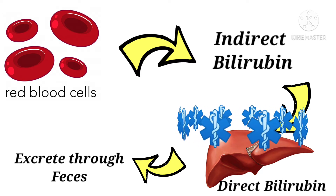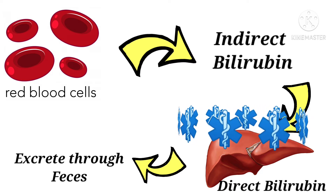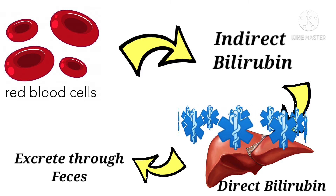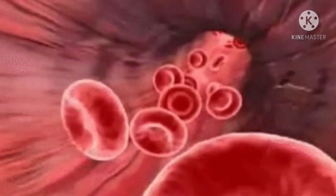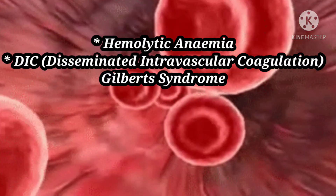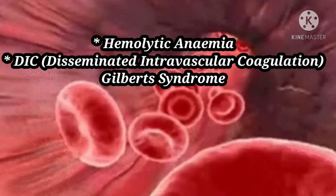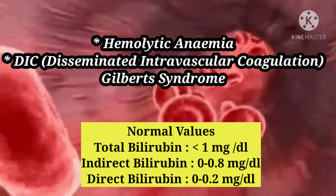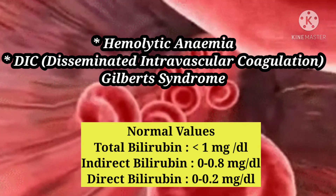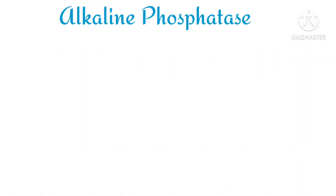Whenever there is a liver abnormality or liver problem, bilirubin levels — especially direct bilirubin — increase. Not only in liver problems, but also in conditions with increased destruction of red blood cells, such as hemolytic anemia, disseminated intravascular coagulation, and Gilbert syndrome, there are high chances of increased bilirubin.